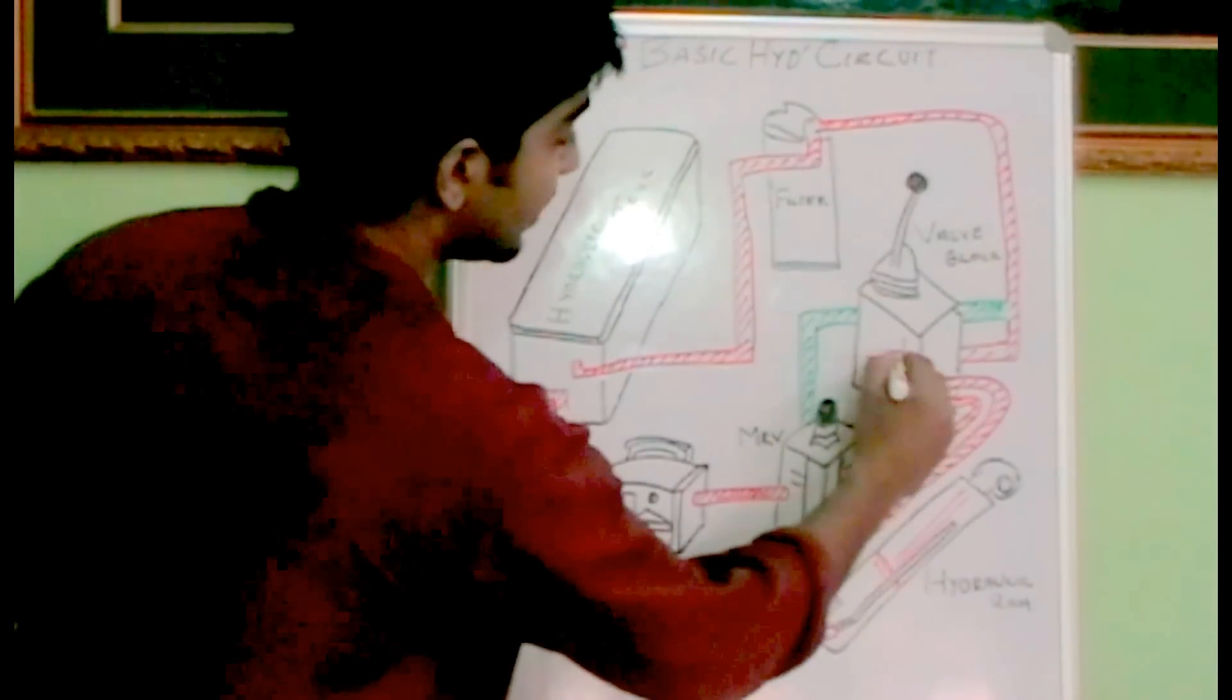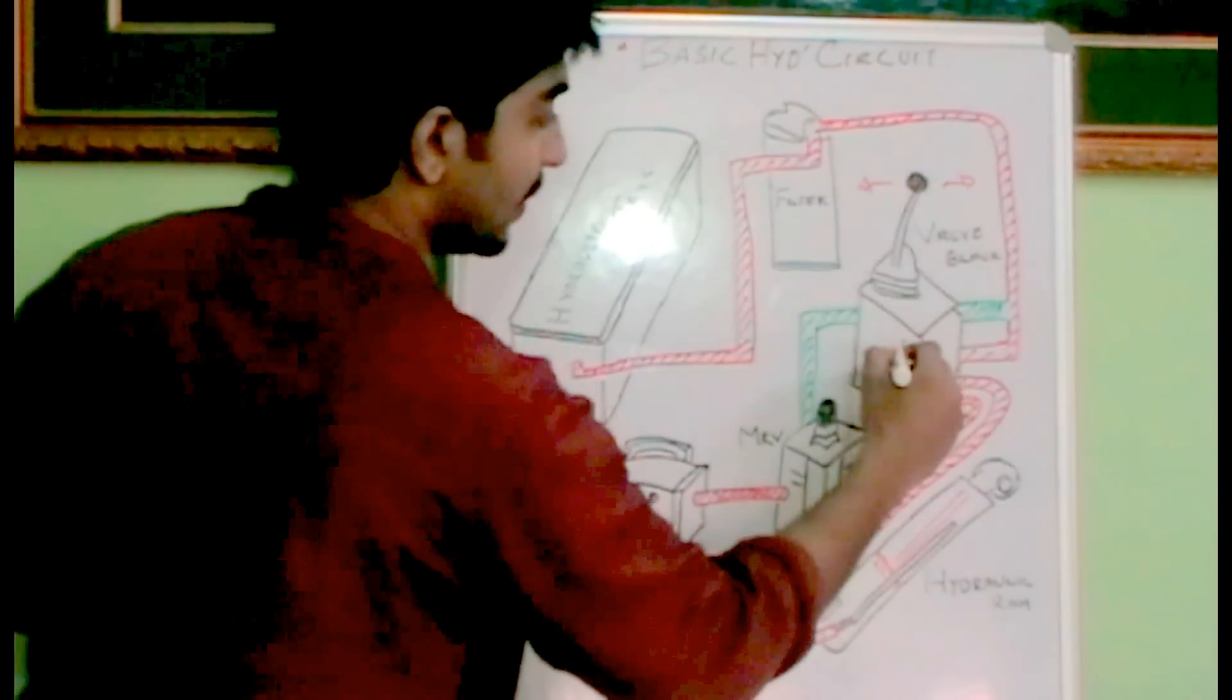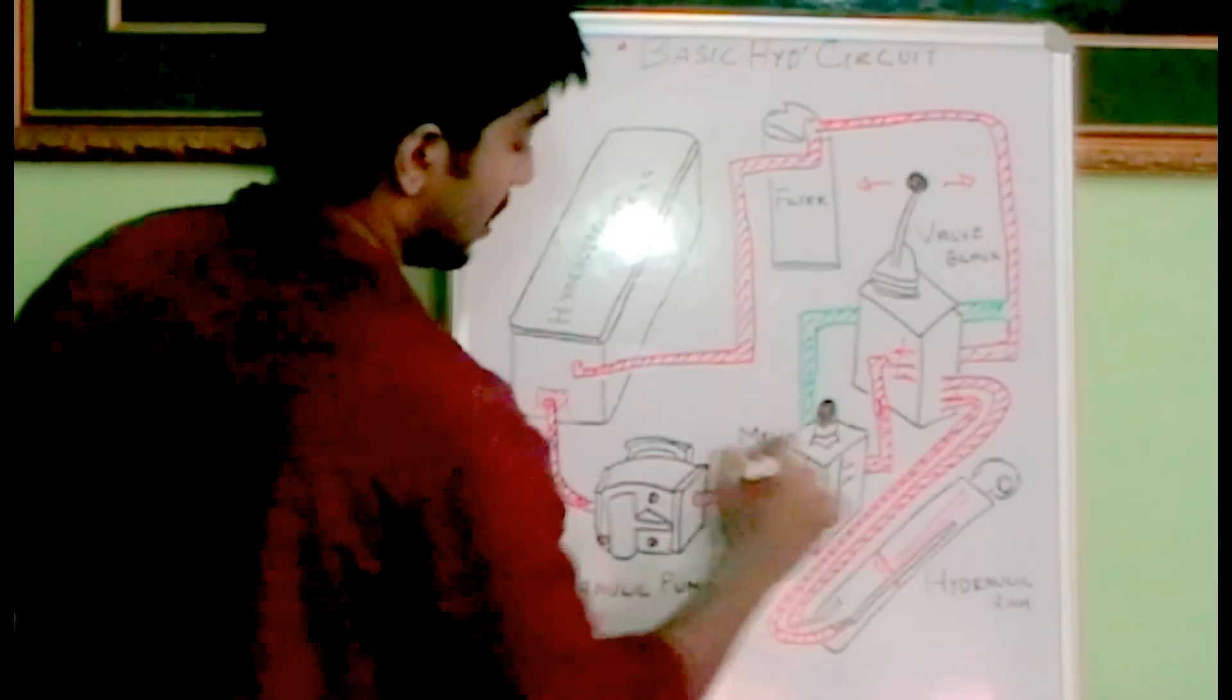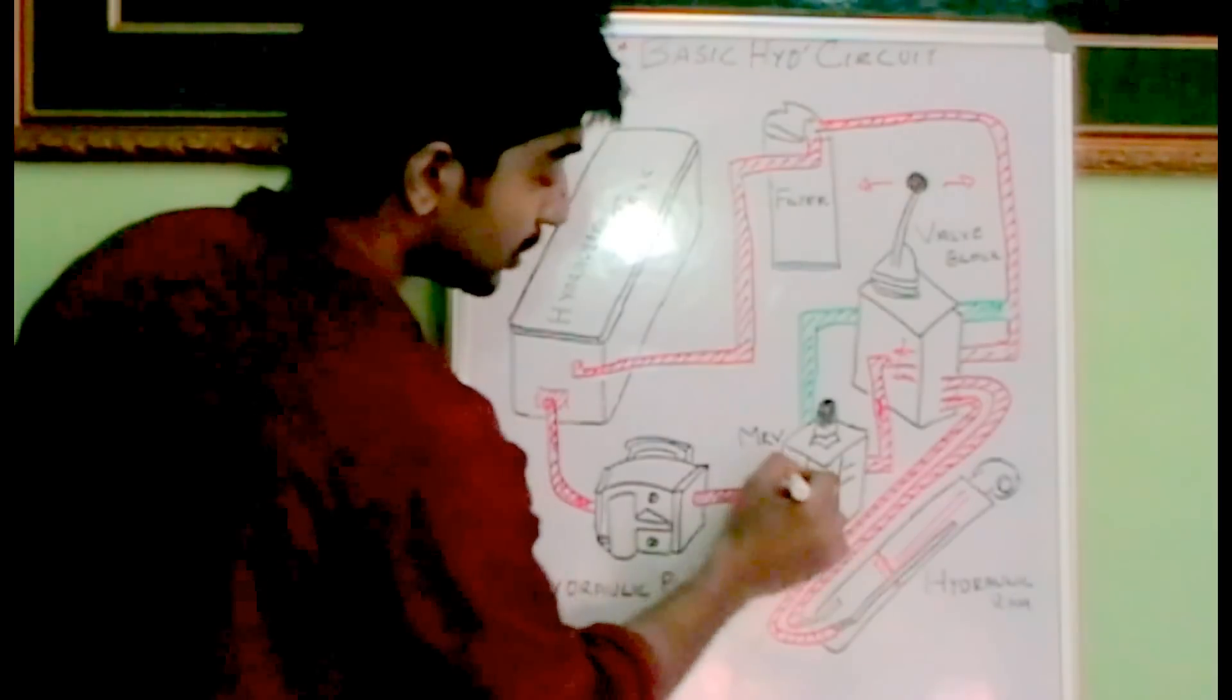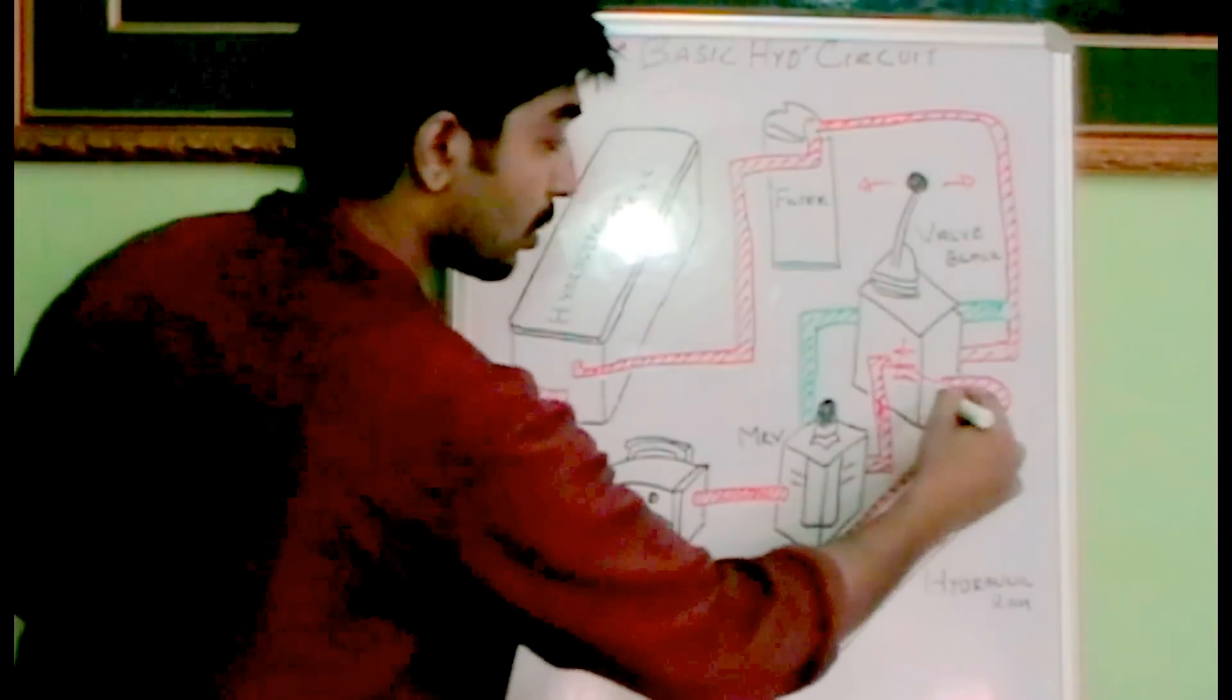The valve block has internal ports. As we move this lever in any direction, these ports will get connected or linked. The hydraulic oil coming from the hydraulic pump through the relief valve will move towards the head side of the ram or the rod side of the ram, which helps the hydraulic ram to move.